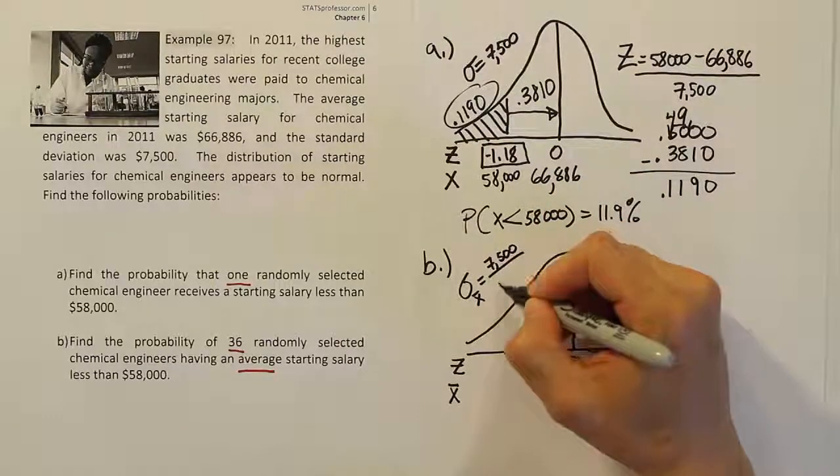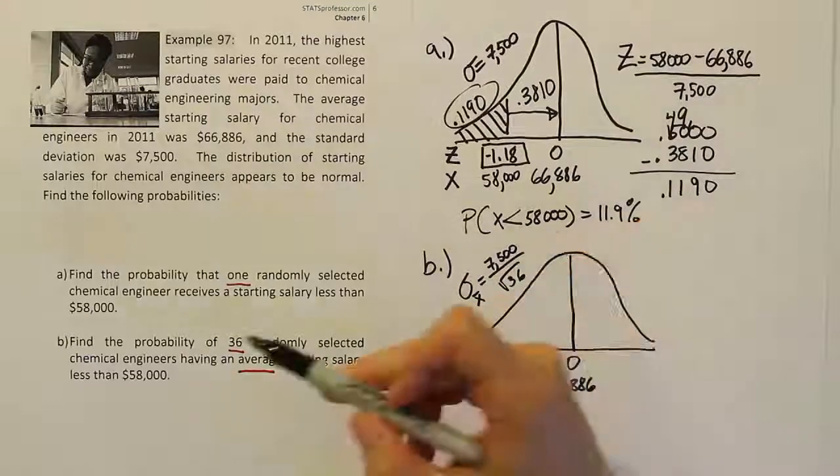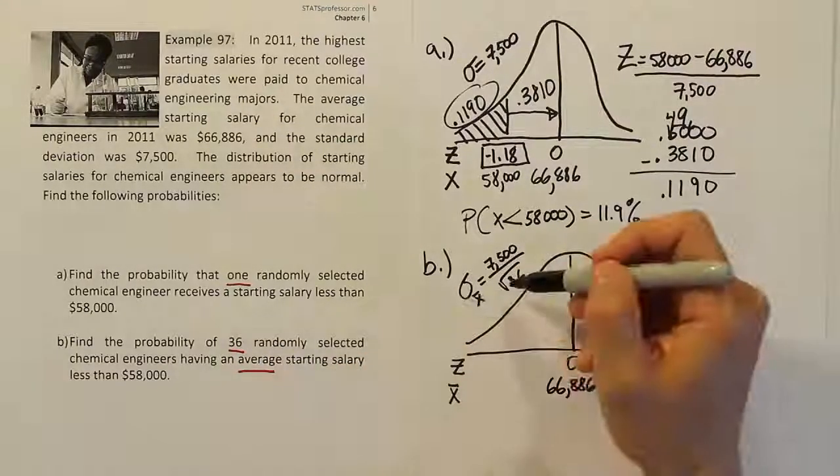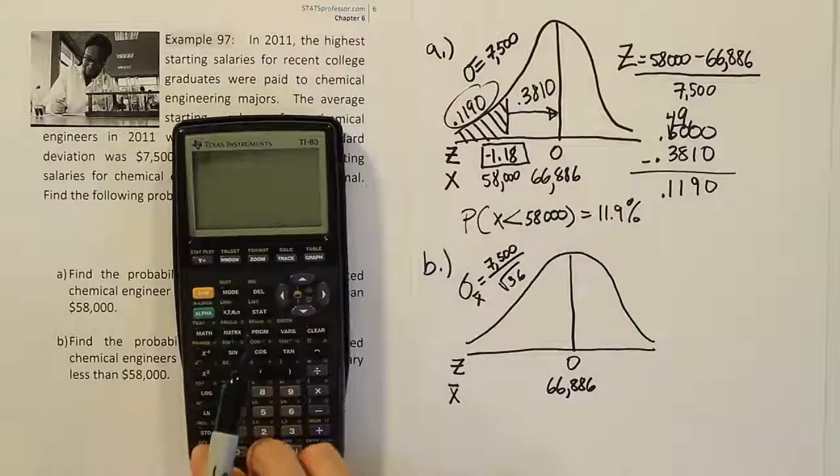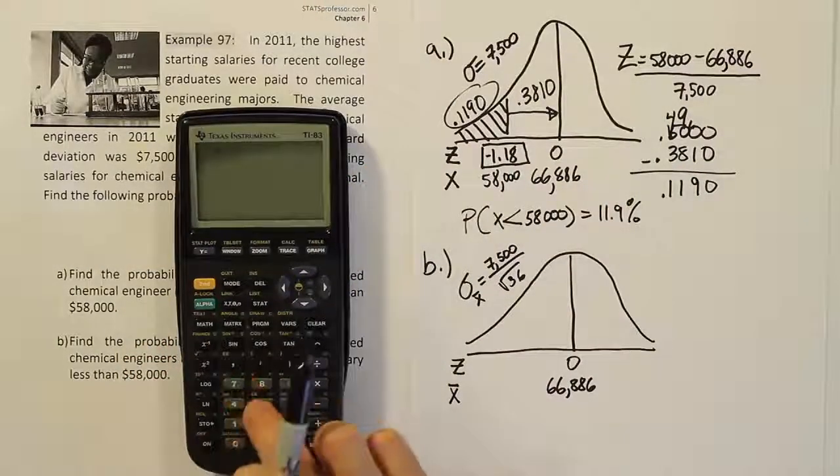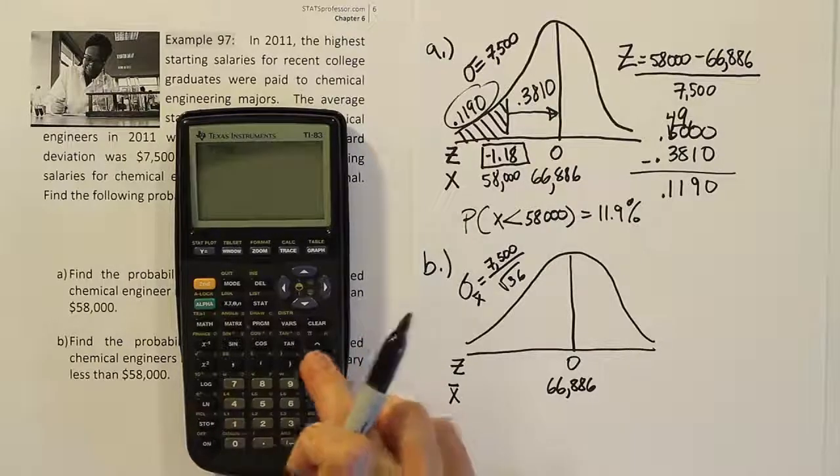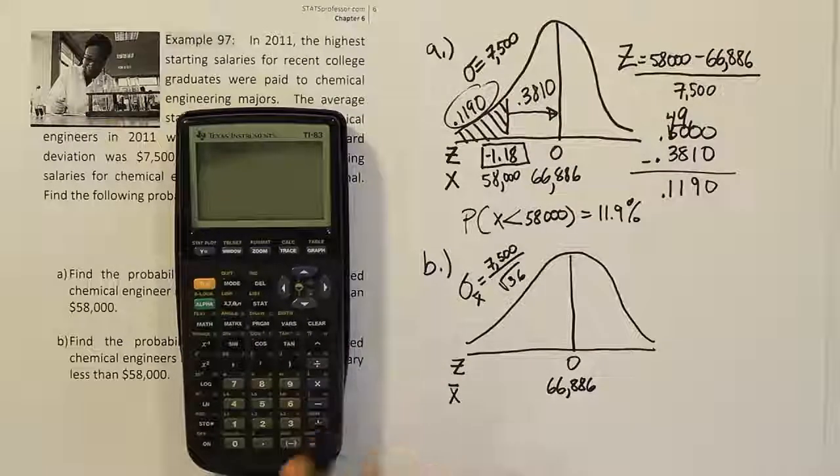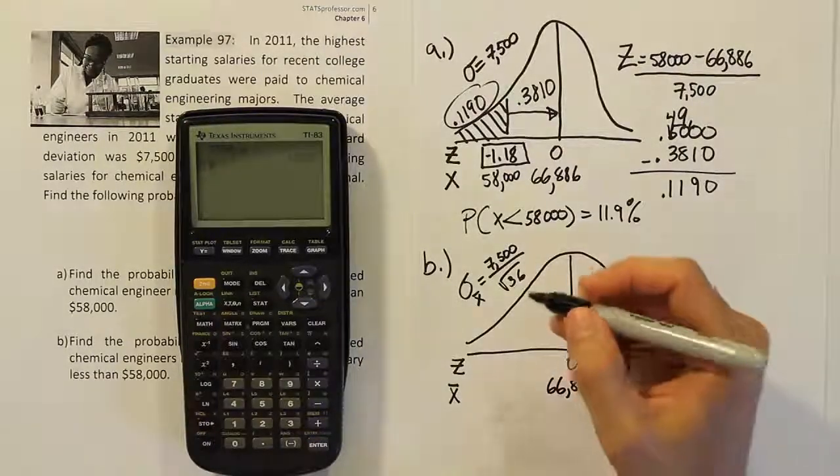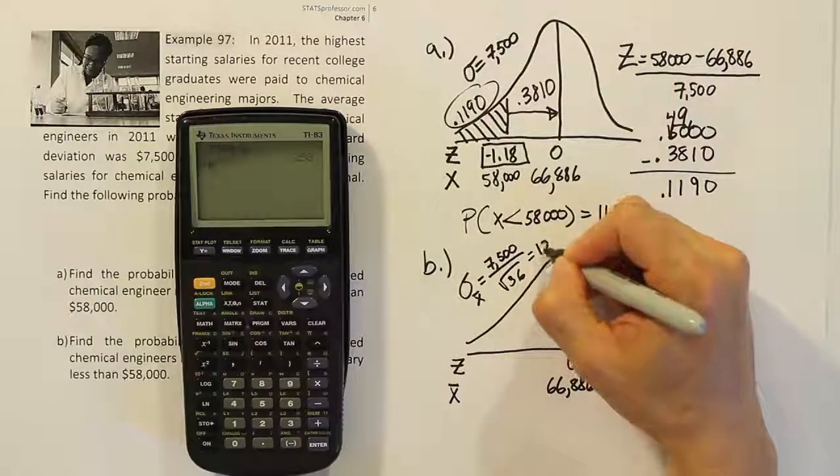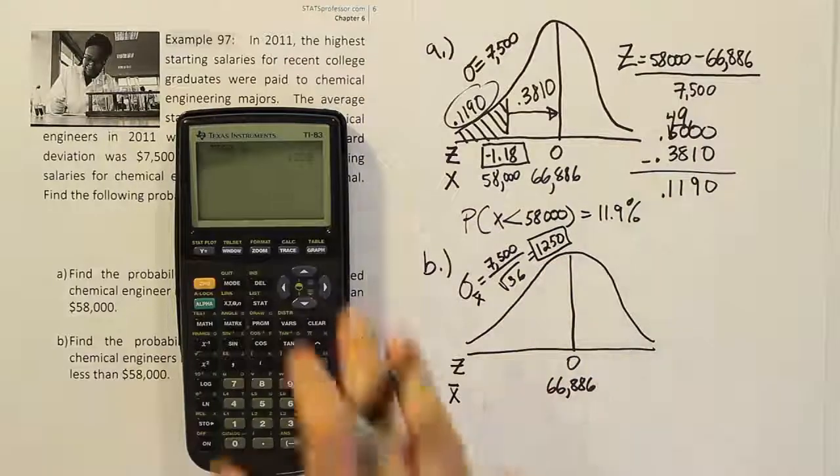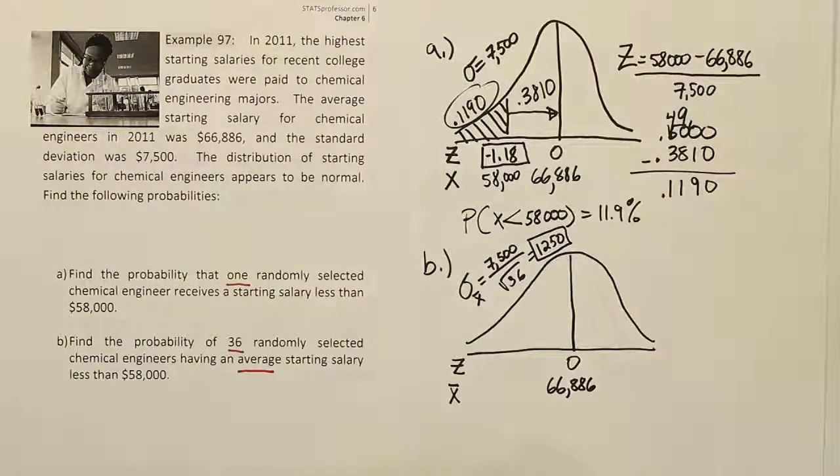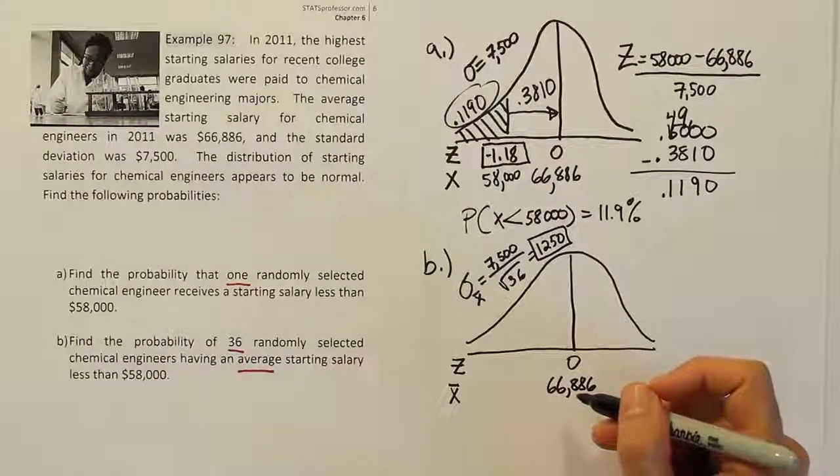It is different than the standard deviation for a single x-value. So we're going to need to take that 7,500, and we're going to divide it by the square root of the sample size in this problem, which is 36. So that's why I put the 36 there. Now, let's work that out to get the approximate value. If we take 7,500 and divide it by the square root of 36, which is 6, we get 1,250. So 1,250 is what we're going to use for our standard deviation in this problem.